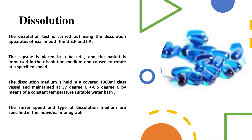The dissolution test is carried out as per USP and IP specifications. The capsule is placed in a basket apparatus immersed in the dissolution medium, which is rotated at a specified speed. The dissolution medium is held in a covered 1000 mL glass vessel maintained at 37°C using a constant temperature bath. The stirring speed, type of dissolution medium, and other parameters are specified in the individual monograph.